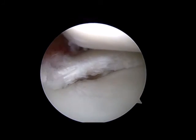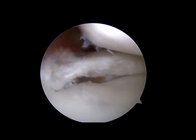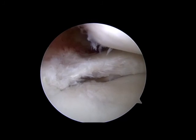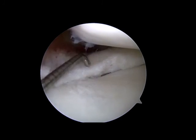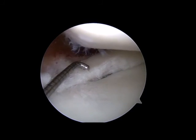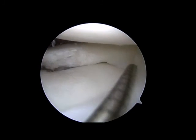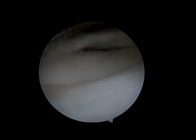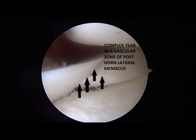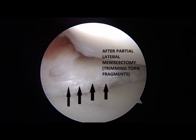There's still plenty of meniscus left. The root of the posterior horn is intact. A healthy rim of meniscus remains. The probe is brought in. I make sure that there are no more loose fragments and check the remaining meniscus. This is the before, and this is after the partial meniscectomy.